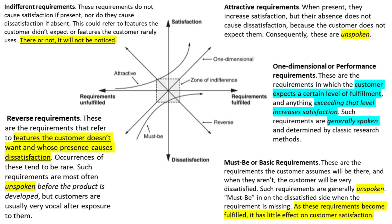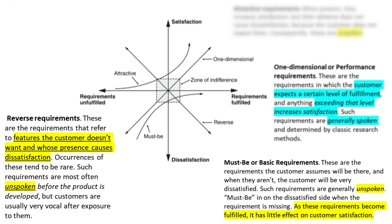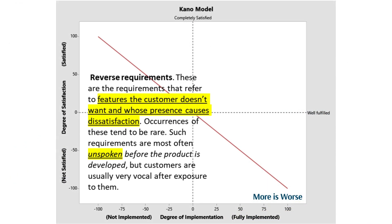Reverse requirements — just like attractive and basic requirements — are unspoken. These are features the customer does not want, and whose presence causes dissatisfaction, though only to a certain level. Having one or two occasions of reverse requirements versus having several occasions makes a difference between satisfaction and dissatisfaction.